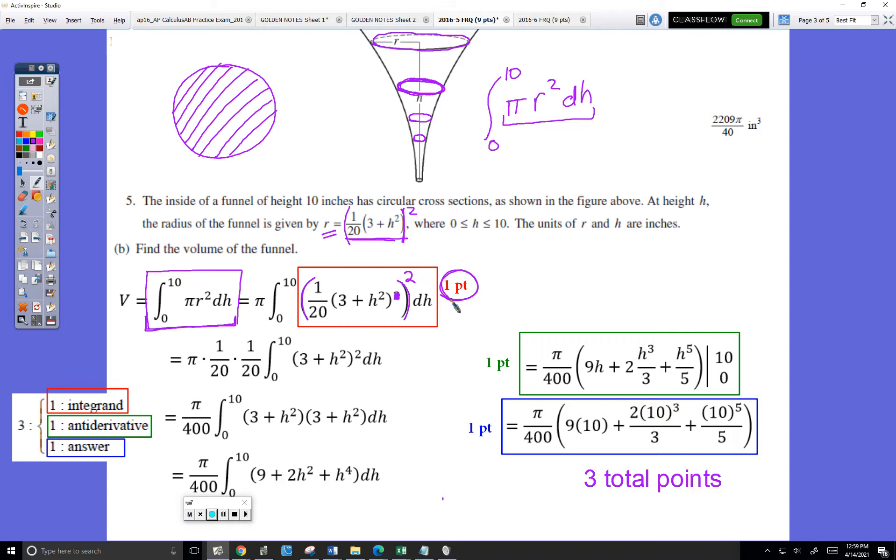To square something means to multiply it by itself. That means you have 1 over 20 times 1 over 20 times this times this again. So that's why they were able to take out the 1 over 20 times 1 over 20 here. The π was a constant. That was able to come out of the integral as well. The π wasn't being squared. That leaves this being squared.